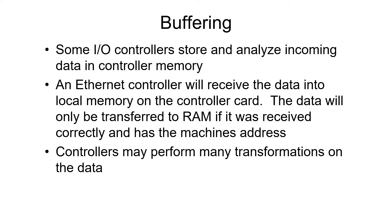Let's consider an Ethernet controller. Ethernet packets have a header that includes an identification of which computer is supposed to receive the message. In the Ethernet protocol, generally all computers receive all packets. If the packet is not identified for this computer, the controller will discard it or simply not pass it to the CPU. So the I/O controller has to analyze the header, check that the information was received correctly, and if everything looks good, then and only then transfer it to RAM and tell the CPU that a packet was received.